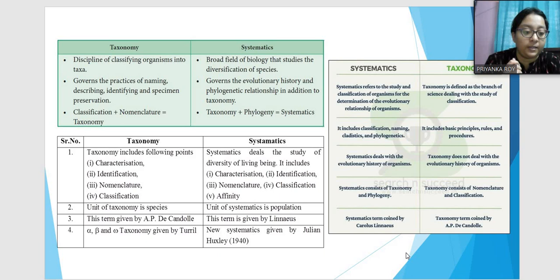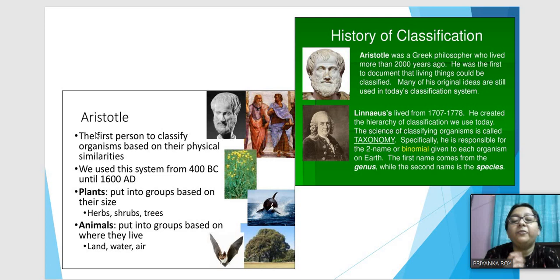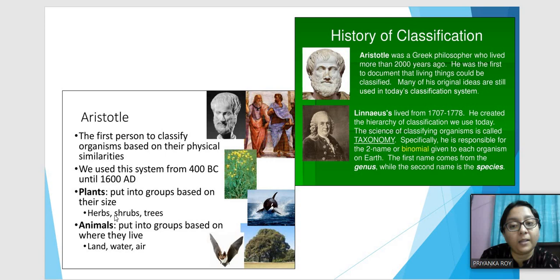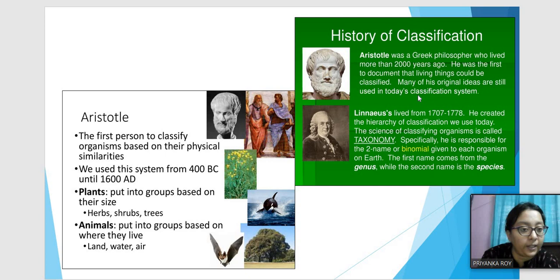The history of classification: Aristotle was the first person to classify organisms based on physical similarity. He grouped organisms into two major groups — plants and animals — dividing plants by size into herbs, shrubs, and trees, and animals by habitat into land, water, and air. Then Linnaeus changed classification by creating the taxonomic hierarchy, giving the binomial nomenclature with two names — the first being genus and the second species.